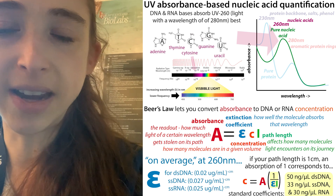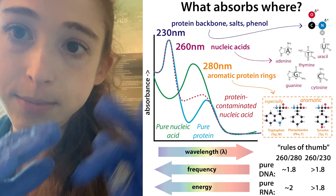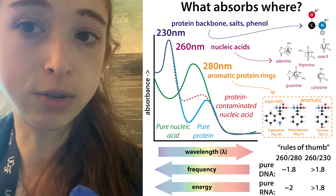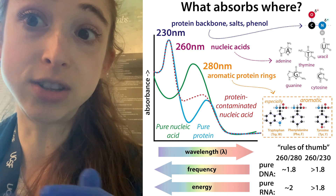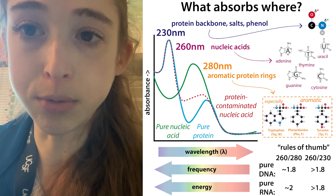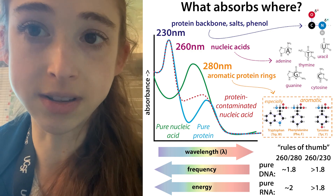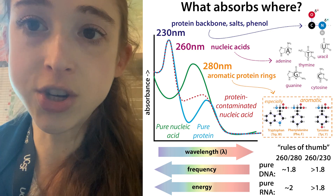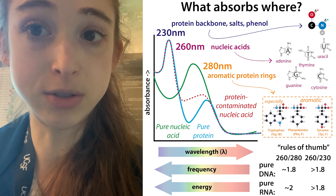Regarding 260 to 280 ratios: different molecules absorb light at different wavelengths, and because different molecules have different characteristic spectra, you can measure the ratio of absorbance at 260 nm versus 280 nm to figure out if you have protein contaminating your DNA sample. Proteins absorb more strongly at 280 nm, whereas DNA and RNA absorb less strongly there. So these ratios give you information about the purity of your sample as well as information about the concentration.